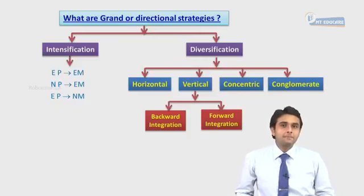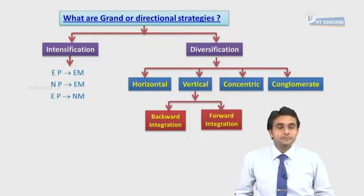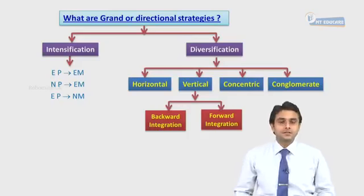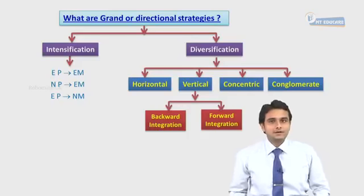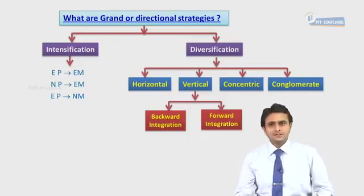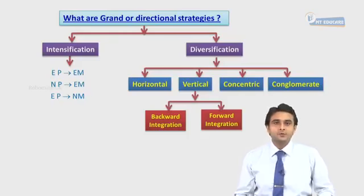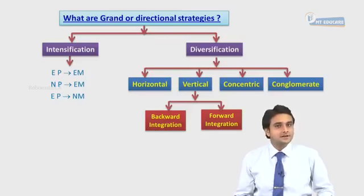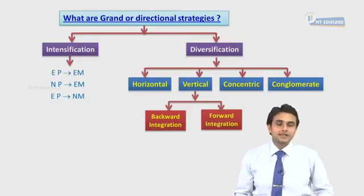I'd like to take an example of ITC — Indian Tobacco Corporation Limited — which is a conglomerate organization. Its diversification is conglomerate diversification. Two of the main businesses it is into are cigarette making and luxury hotels.